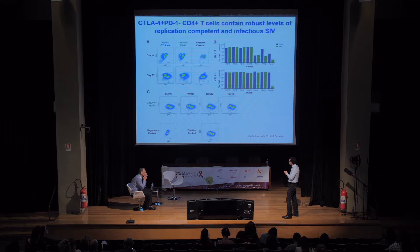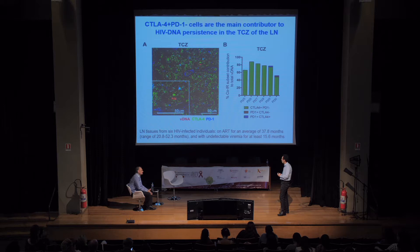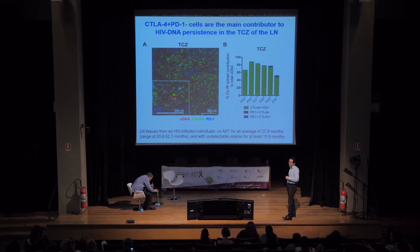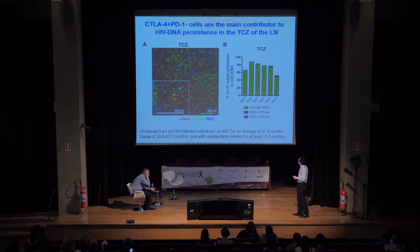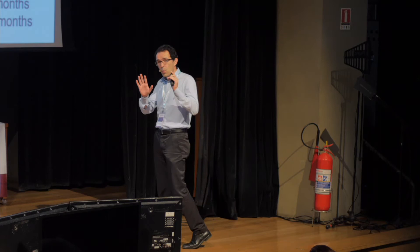To confirm this reservoir exists in humans, in collaboration with Vince Marconi at Emory University, we collected lymph nodes from six HIV-infected patients on ART for an average of three years (several more than five years) with undetectable viremia. Even more strongly than in macaques, the few cells harboring HIV DNA are largely — up to 80% — CTLA-4+PD-1−. As a quantity, there is more in the follicle, but there is also a reservoir outside the follicle, published recently in Immunity in 2017.